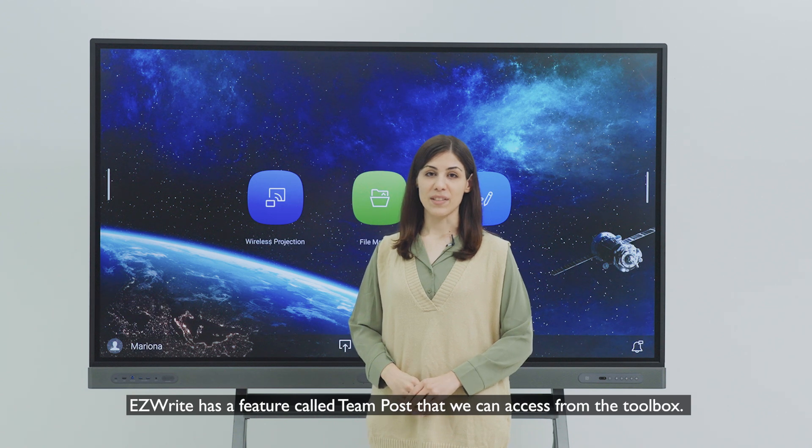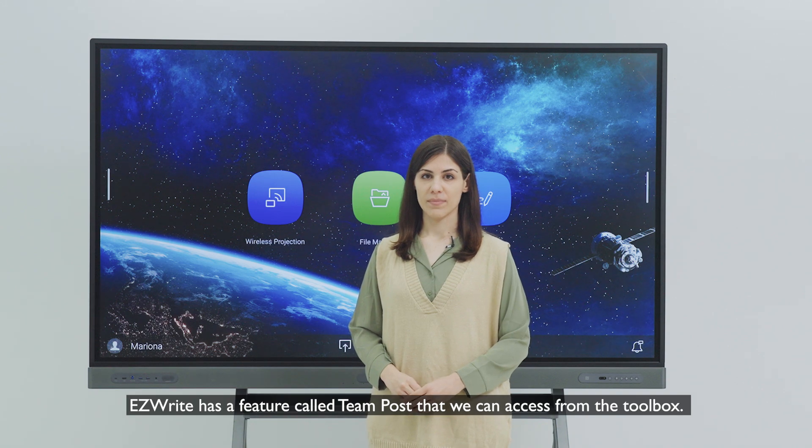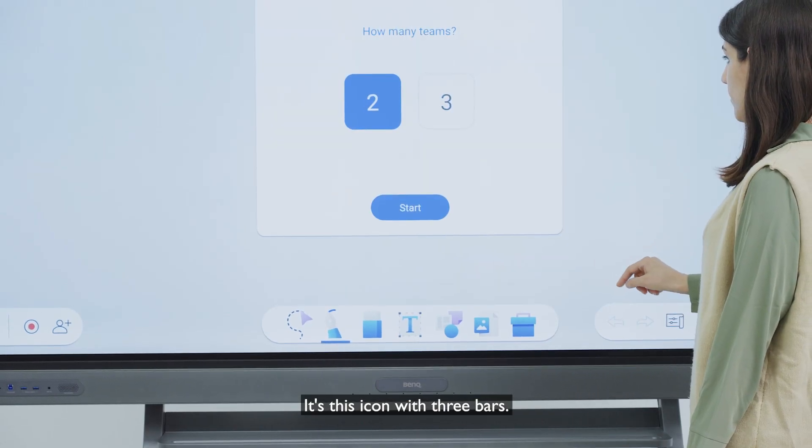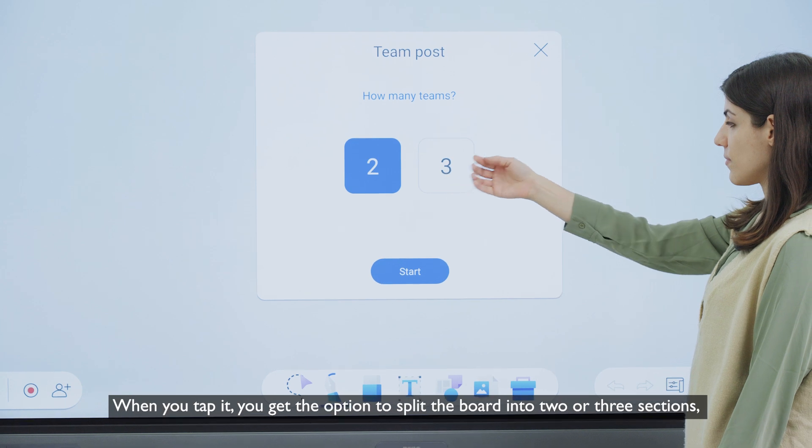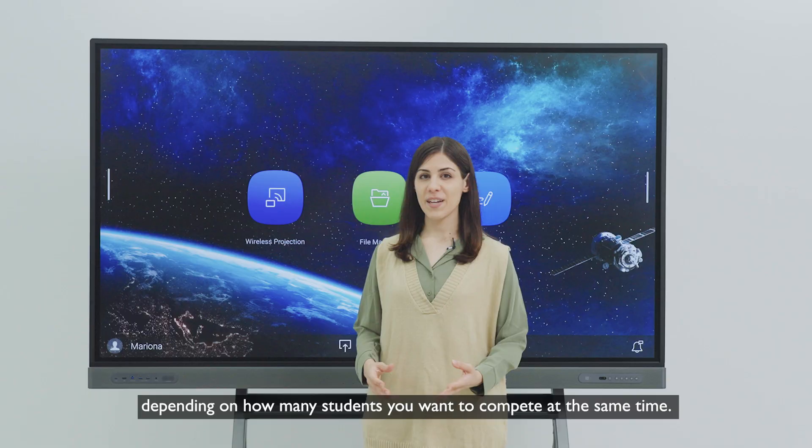Easy, right? It has a feature called team post that we can access from the toolbox. It's this icon with three bars. When you tap it, you get the option to split the board into two or three sections, depending on how many students you want to compete at the same time.